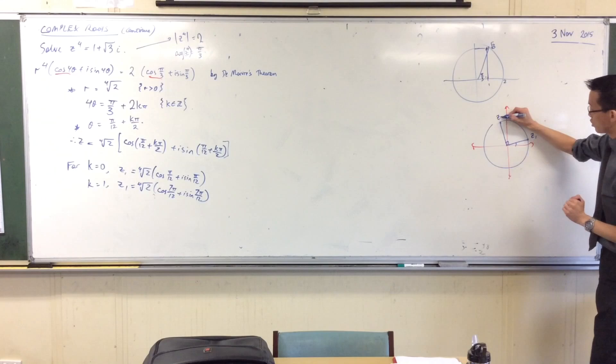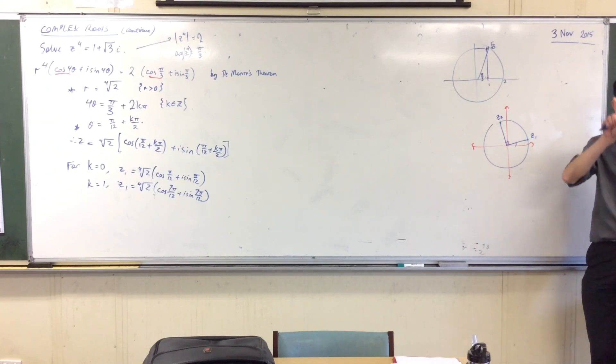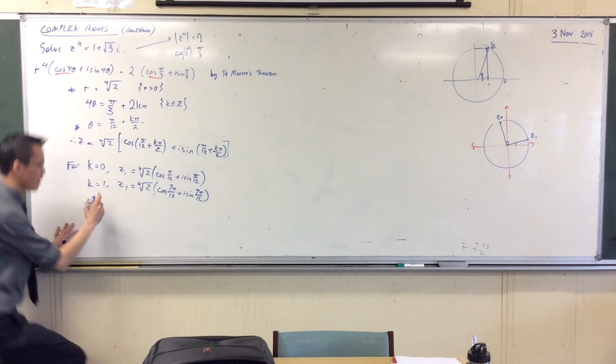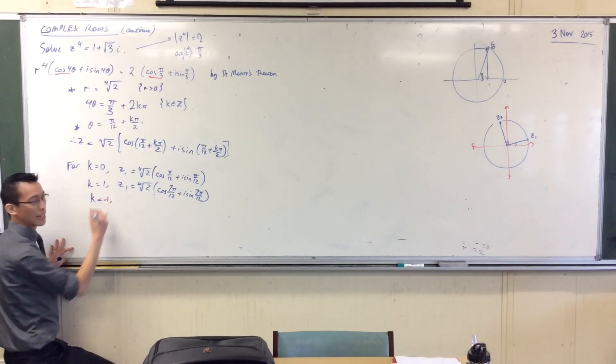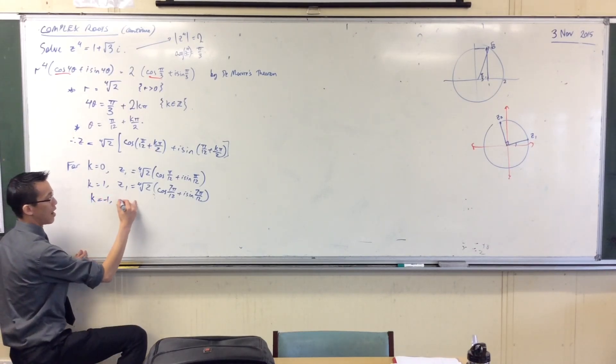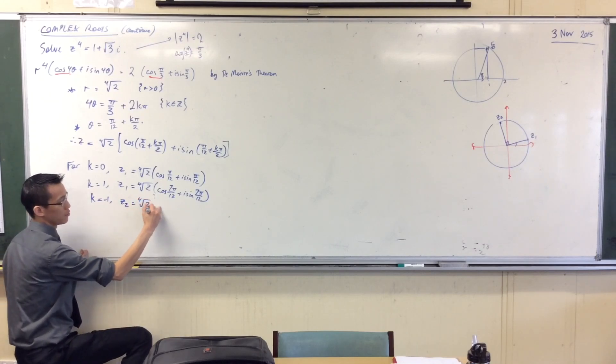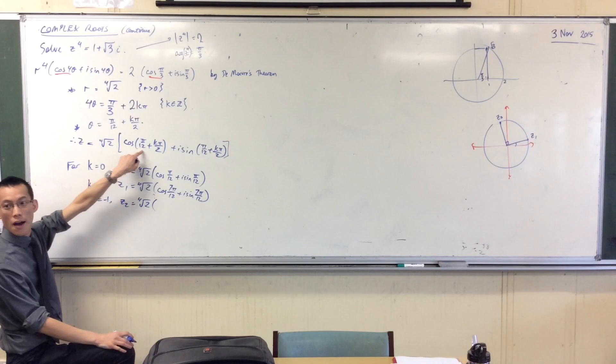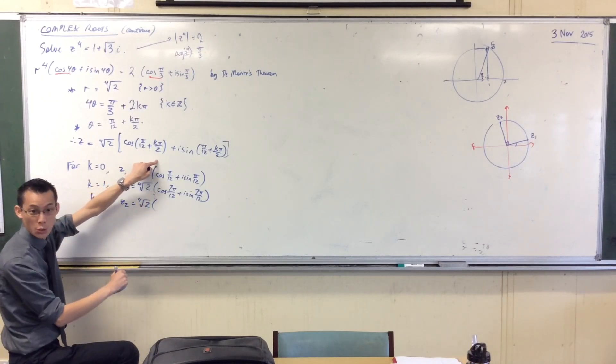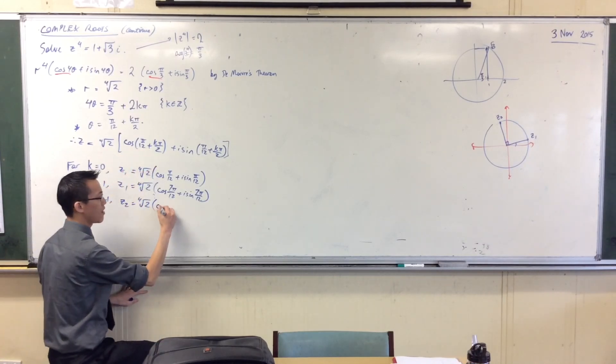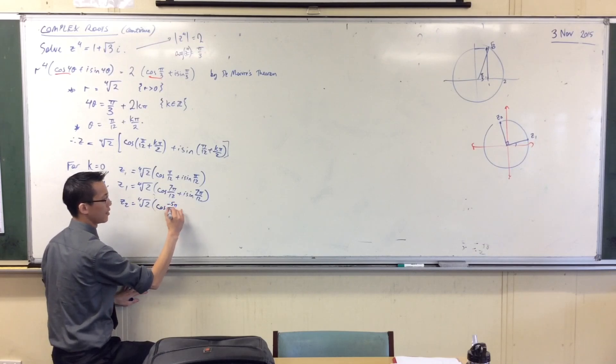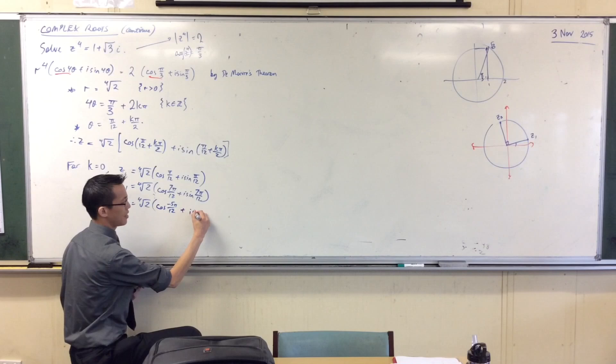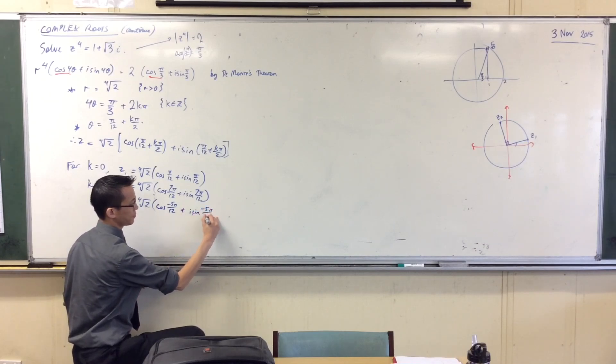So there's z1, there's z2. I'm going to stop incrementing up, I'm going to go to the negative values now. So let's try this. Instead of k equals 2, I'm now going to go to k equals negative 1. I'm going to get my next root, which is the fourth root of 2 times, and this time I've got pi on 12 minus the same angle pi on 2. So now I'm going to get my negative because I'm taking k equals negative 1. And then I've got the same angle over here.